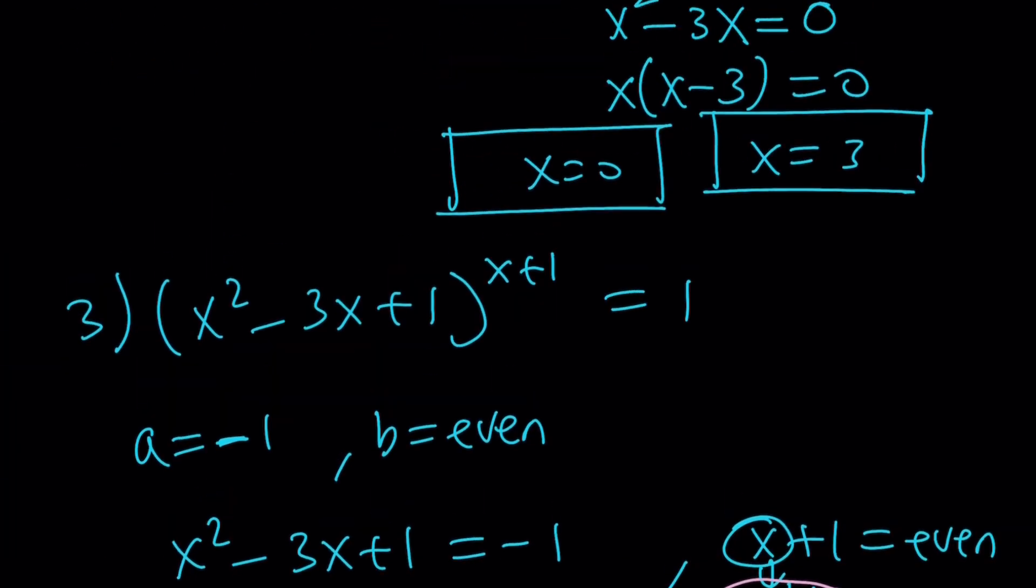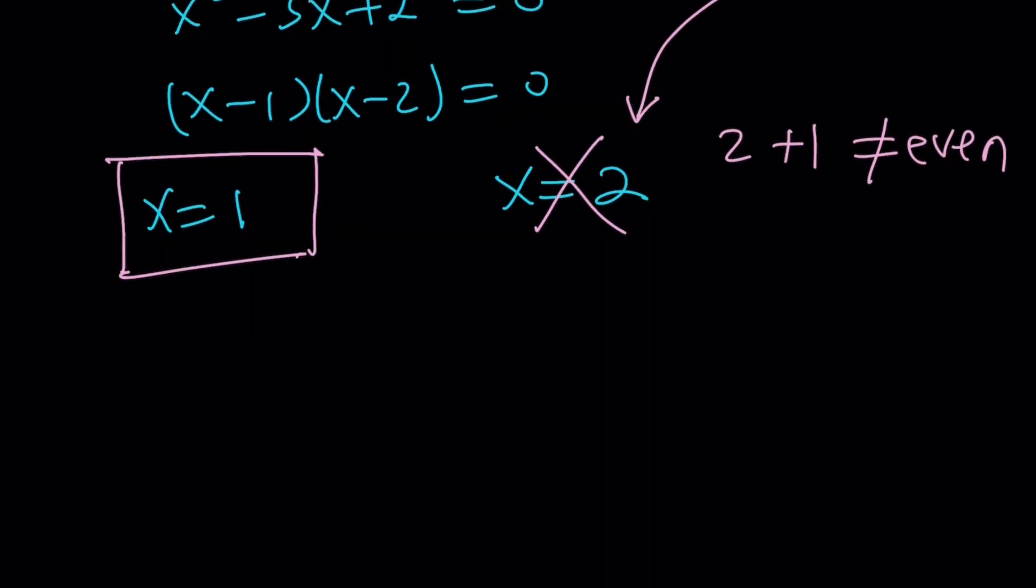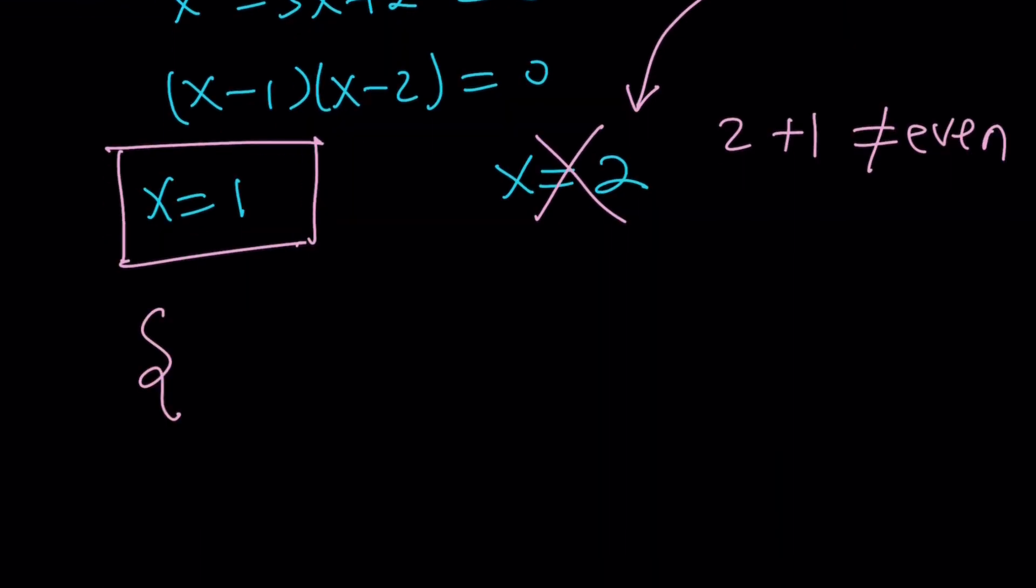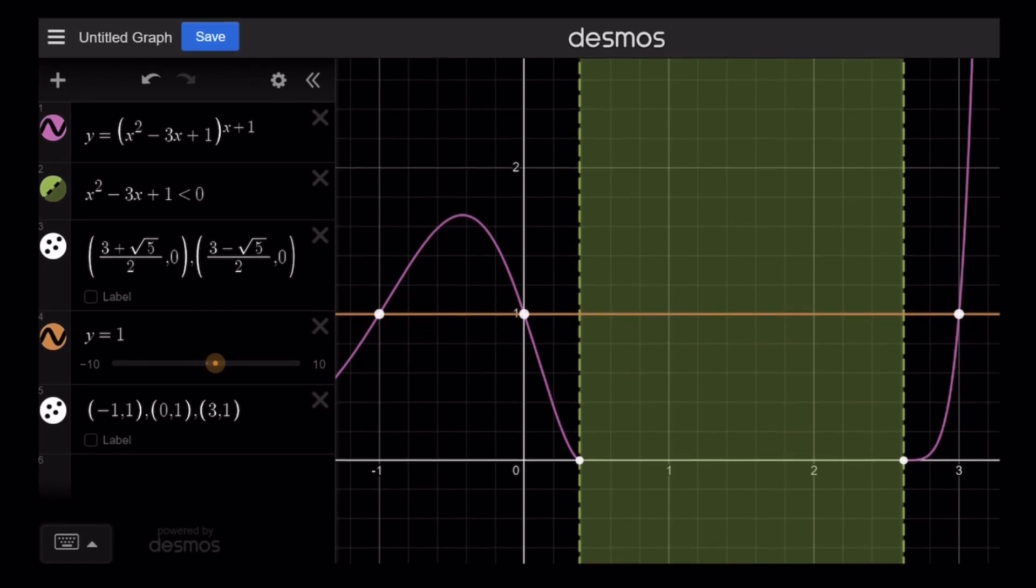So how many solutions do we have in total? 1, 2, 3, 4. Let's go ahead and list them together, and now we're going to look at the graph. Negative 1, 0, 1, and 3 looks like the solution set. But let's go ahead and take a look at this graph.